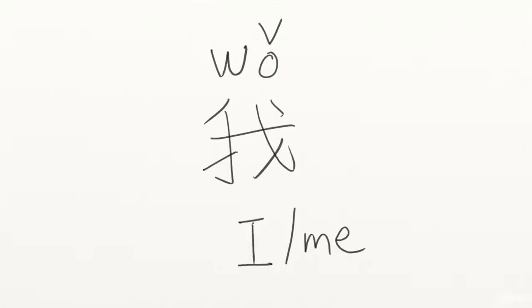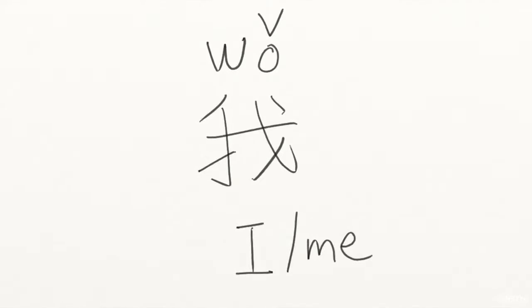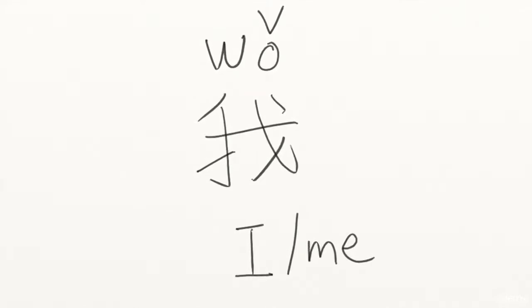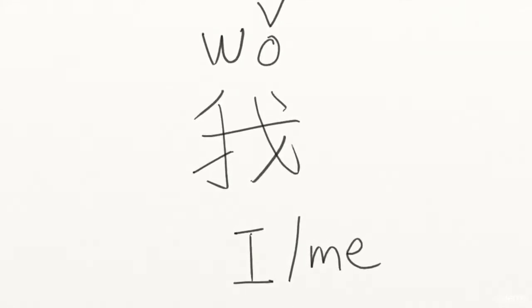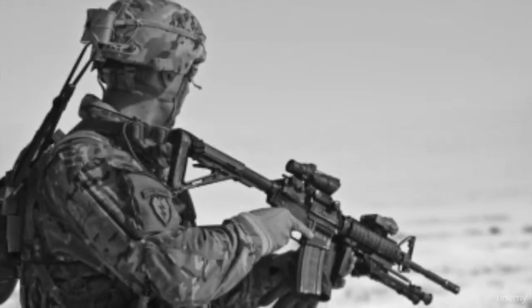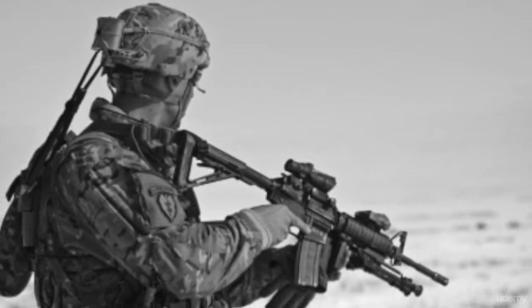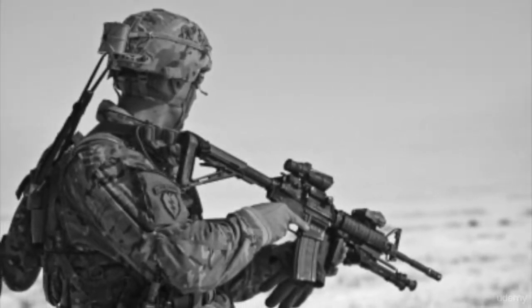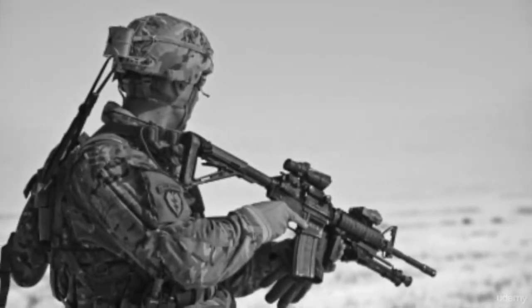The first one is 我 (wǒ). 我 means I or me. The way you can remember this pronoun is to think of war — I make war, 我 make war. Now, you try it.